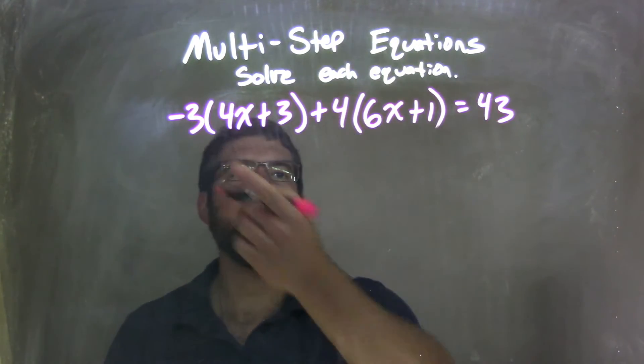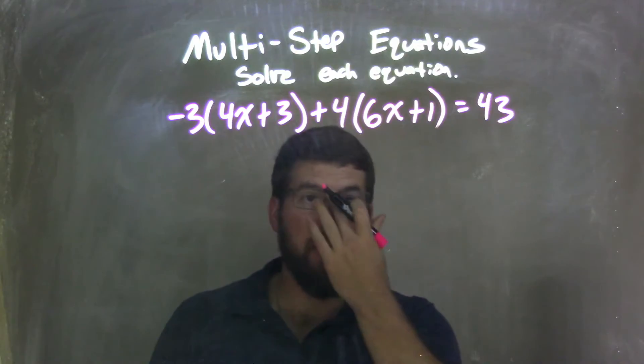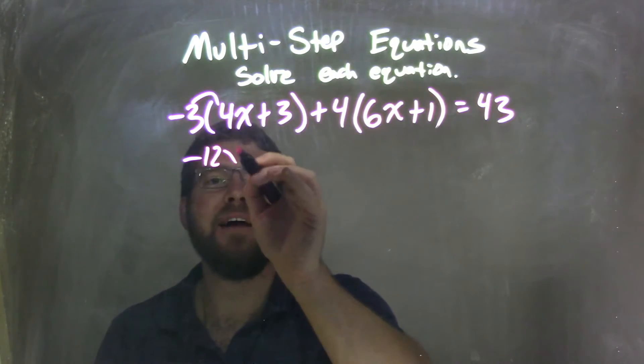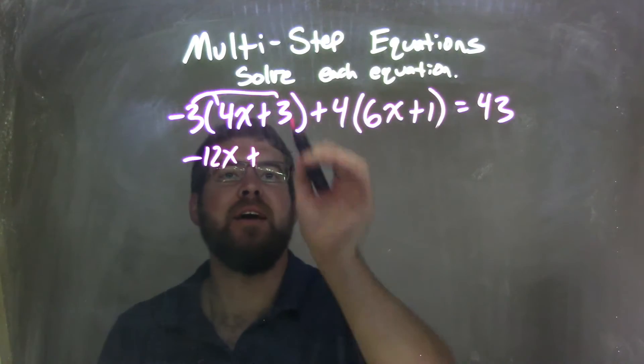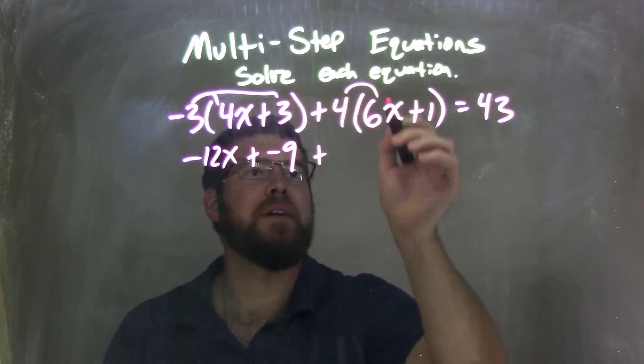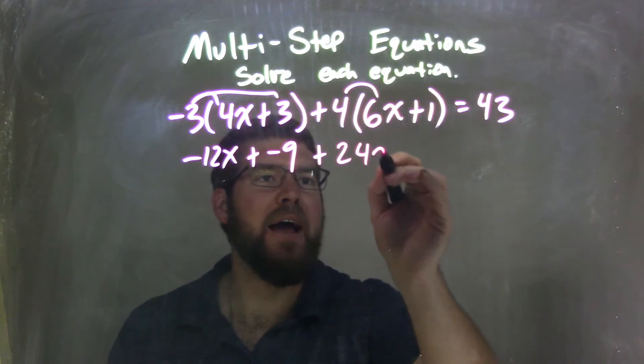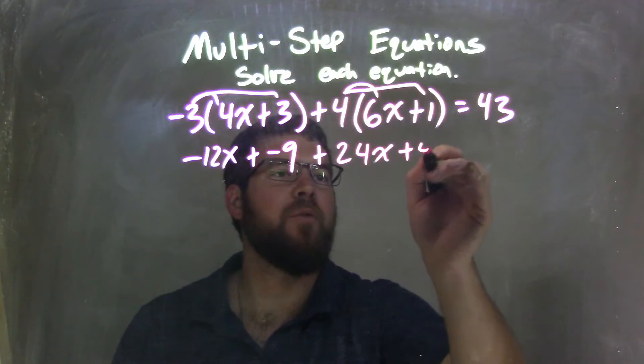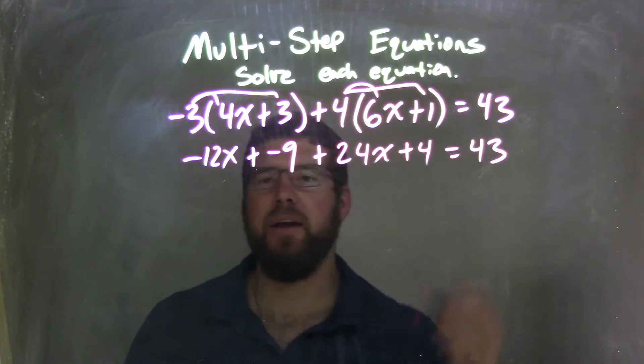I want to distribute to each parentheses. It makes it easier. So negative 3 times 4x is negative 12x, plus negative 3 times 3 is negative 9, plus 4 times 6x is 24x. All this is distributing. 4 times 1 is 4, equals 43.